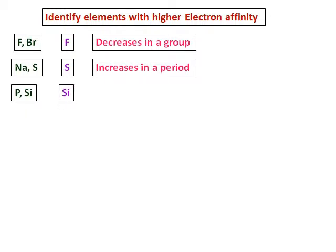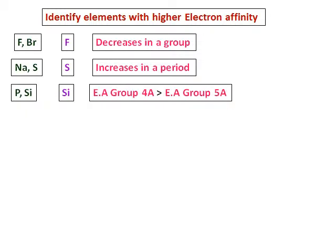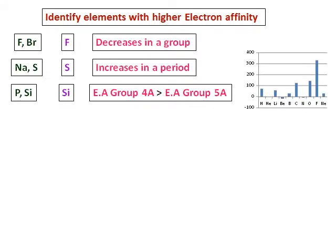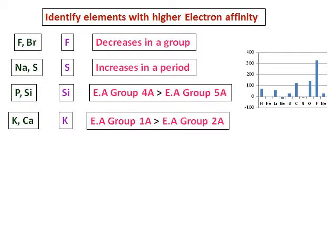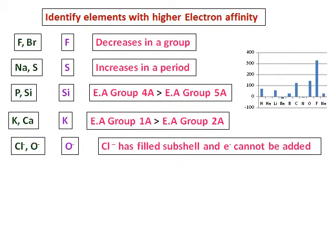Between phosphorus and silicon, silicon will have higher electron affinity because electron affinity of group 4A is greater than that of group 5A — refer to the graph. Between potassium and calcium, potassium will have higher electron affinity due to the discrepancy where electron affinity of group 1A is greater than group 2A. For Cl⁻ and O⁻, O⁻ is the answer because Cl⁻ is already stable and will not accept another electron.